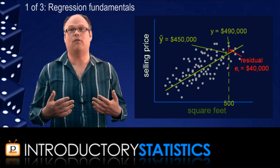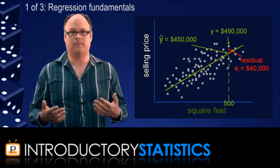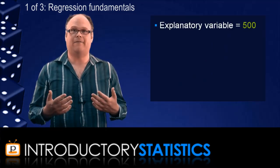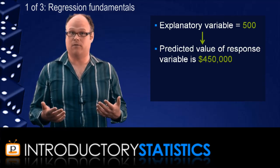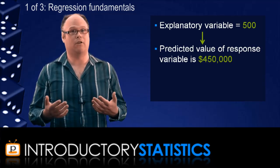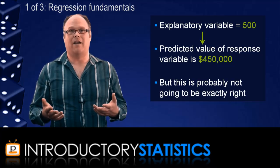That's because they feature in a thing called the prediction interval. As we just saw, a house of 500 square feet is predicted to sell for $450,000. But also, as we just saw, this single value prediction is often going to be not quite right.